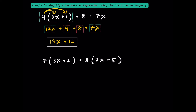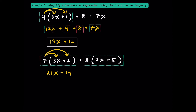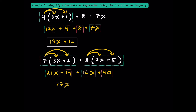Let's try one more. Following the order of operations, multiplication comes first. Distributing 7 to 3x gives 21x, and distributing 7 to 2 gives 14. Then distributing 8 to 2x gives 16x, and distributing 8 to 5 gives 40. Combining like terms: 21x and 16x give 37x, and 14 and 40 give 54. Our simplified algebraic expression is 37x plus 54.